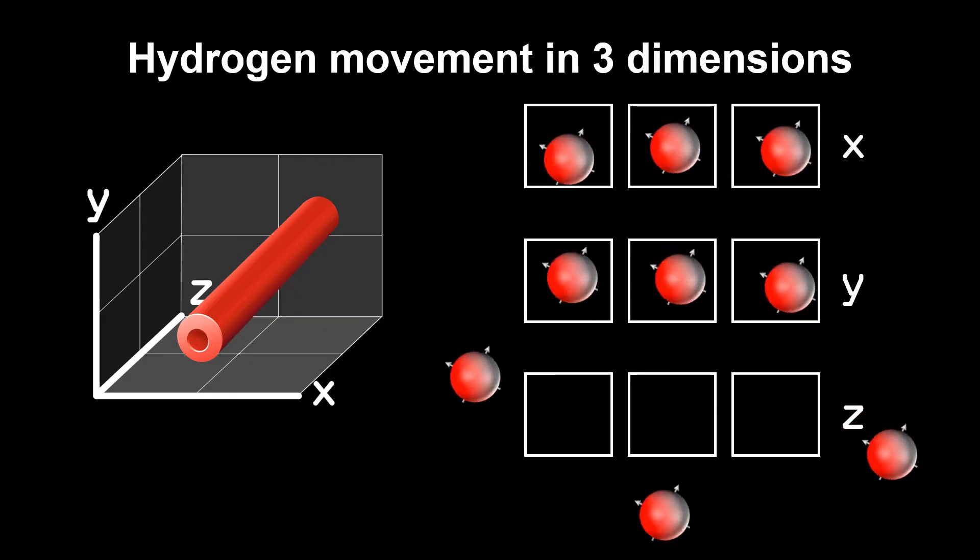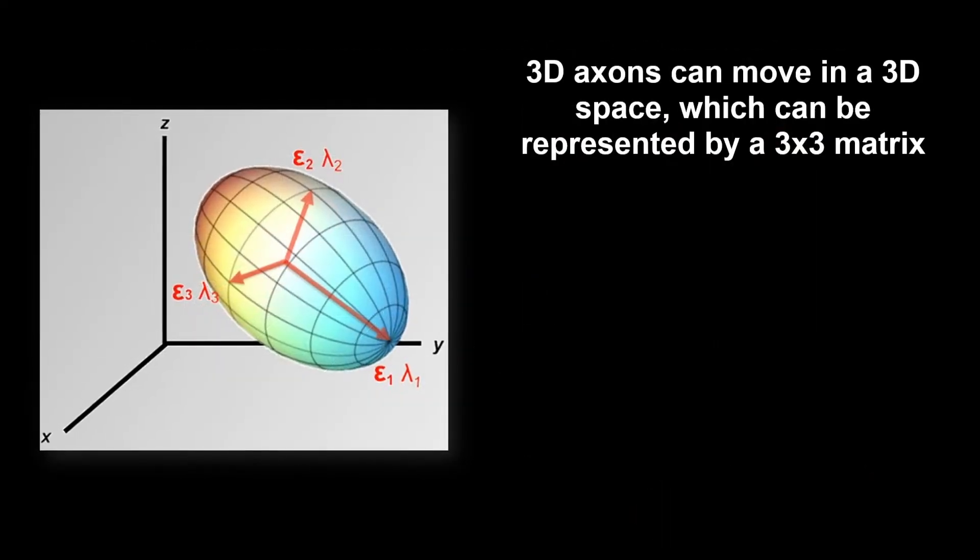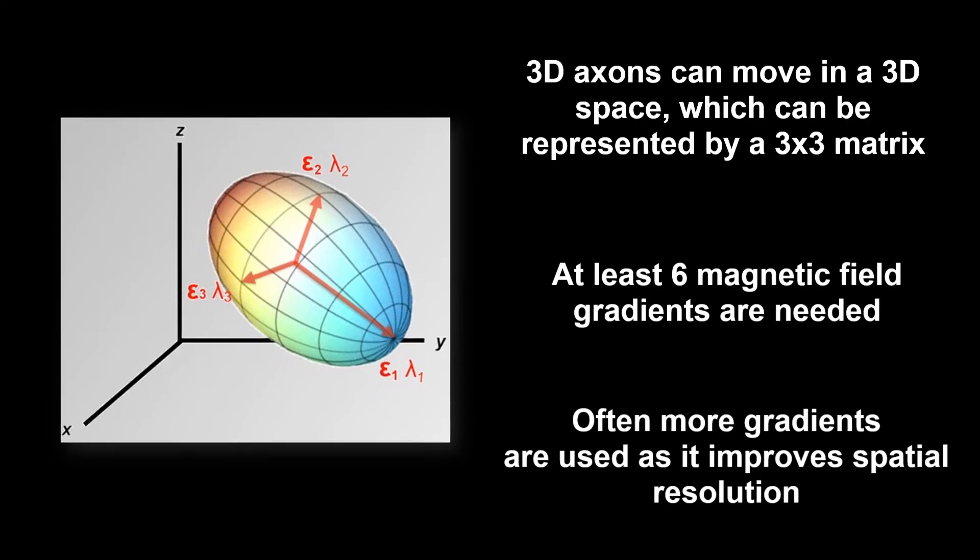Since we are interested in all these directions, x, y and z, we need multiple magnetic field gradients for different directions. In that way, we can capture in which direction hydrogen protons move the most.